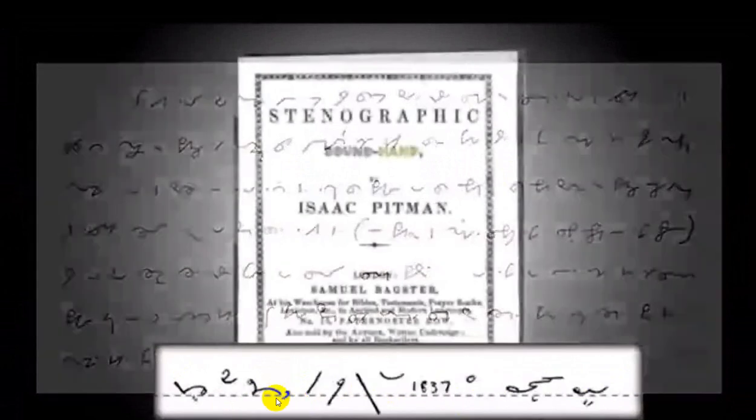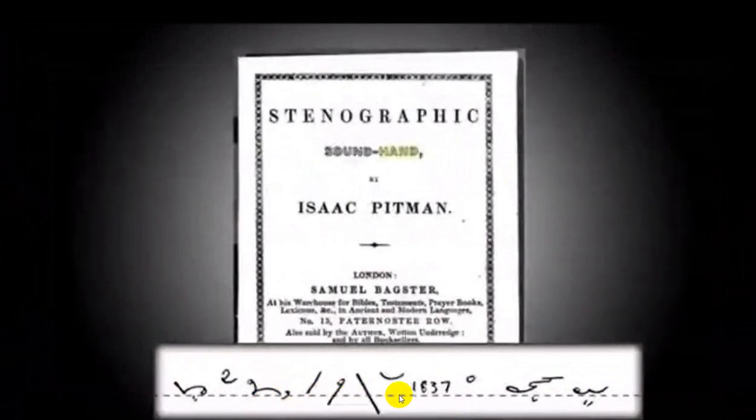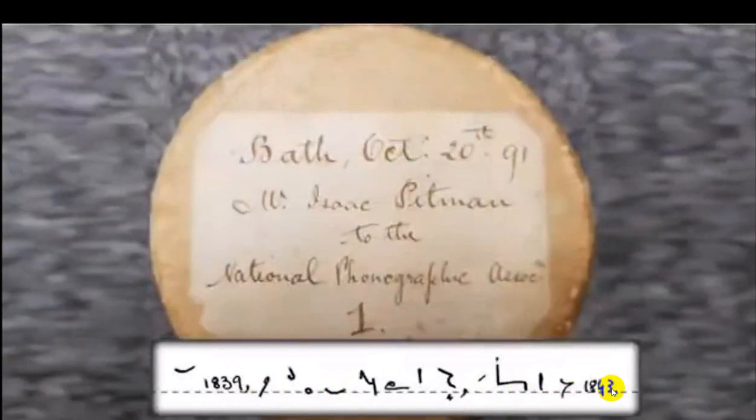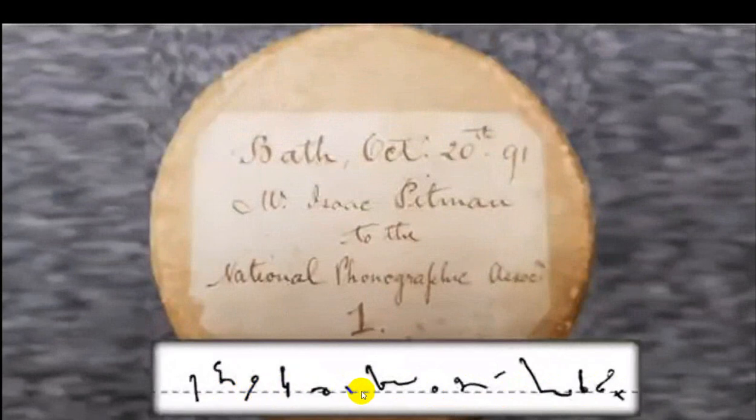That was the birth of Pitman's shorthand system, which he published in 1837 as Stenographic Soundhand and soon started to teach it to his students at Watton Under Edge. In 1839, he opened his own private school at Bath and conducted it until 1843. During that time he devoted himself to perfecting his system and propagating its use.